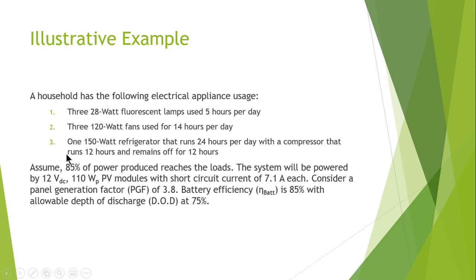It is given that 85% of the power reaches the load, and the system will be powered by 12-volt DC. A 110-watt photovoltaic module with a short-circuit current of 7.1 amperes each should be considered, and assume a Panel Generation Factor of 3.8.